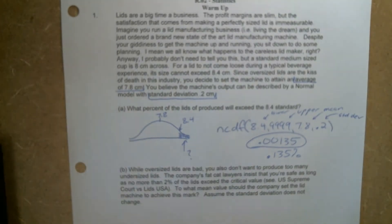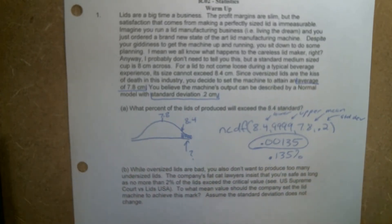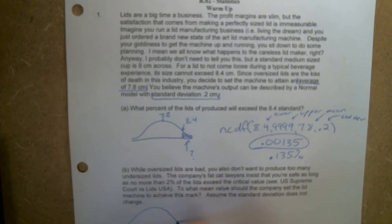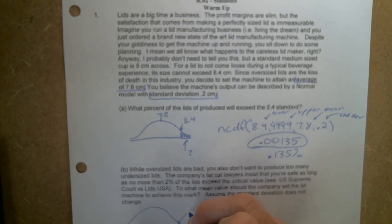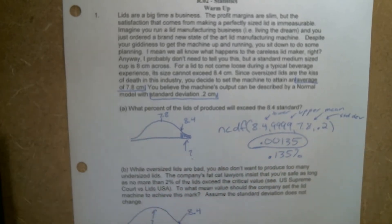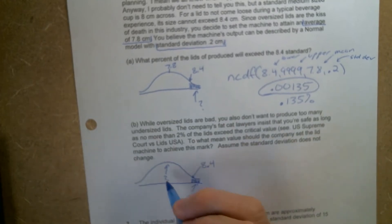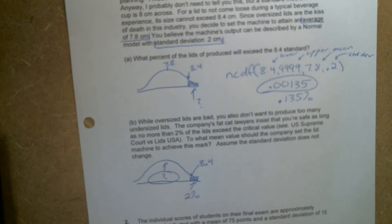Part B: while oversized lids are bad, you also don't want to produce too many undersized lids. The company's lawyers insist that you're safe as long as no more than 2% of lids exceed the critical value. To what mean value should the company set the lid machine to achieve this mark? Assume the standard deviation does not change. We want the shaded part to be 2%, corresponding to a value of 8.4. Where does our curve have to be centered so that when 2% of the curve is shaded, it corresponds to 8.4?